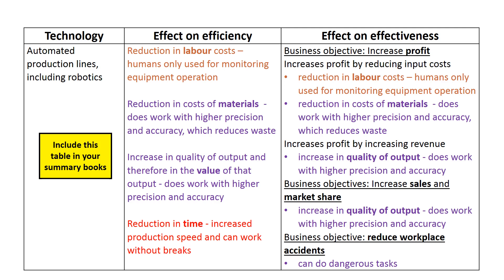Automated production lines and robotics contribute to the business objective of increasing profits by reducing input costs — specifically reducing labour costs by replacing human labour now only required to monitor the operation, and reducing materials costs through higher precision and accuracy which reduces wastage. They also increase profits by increasing revenue, since higher precision and accuracy produces higher quality output that can be sold at a higher price.